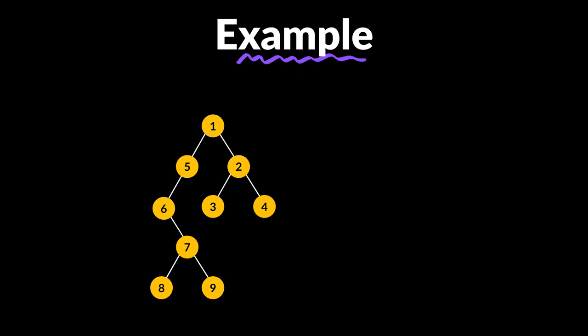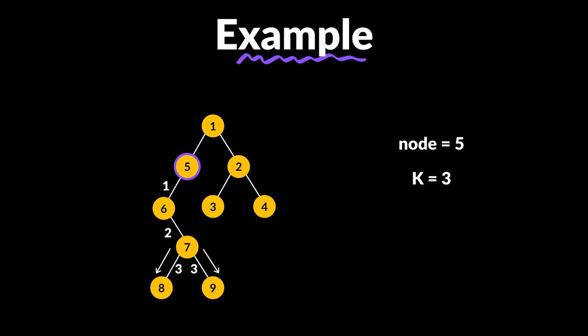With an example, we have a binary tree where our root is 1 and the target node is 5. From node 5, we need to print all nodes at distance K. Distance 1 is node 6, distance 2 is node 7, and distance 3 gives us nodes 8 and 9. But these nodes are only in the subtree.